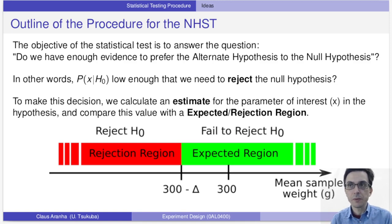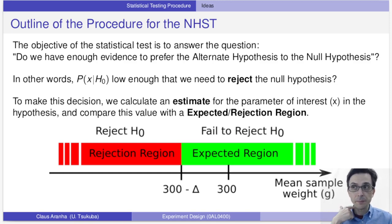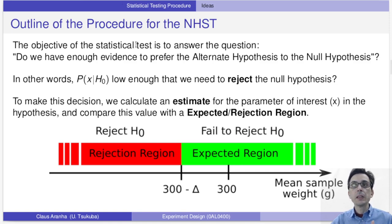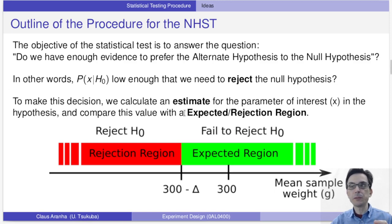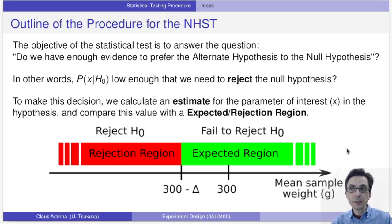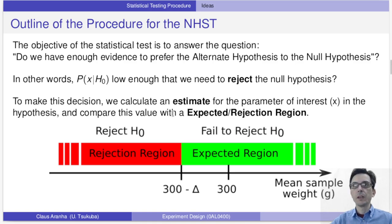We calculate a statistic, for example the mean weight, then we calculate the probability of this statistic under the null hypothesis. Finally, based on this value, we reject the null hypothesis if this probability is low enough — in other words, if the value of the statistic is too unlikely under the model defined by the null hypothesis. By this definition we have to define an expected region, where the value of the statistic has high probability under the null hypothesis, and a rejection region, where it has low probability.